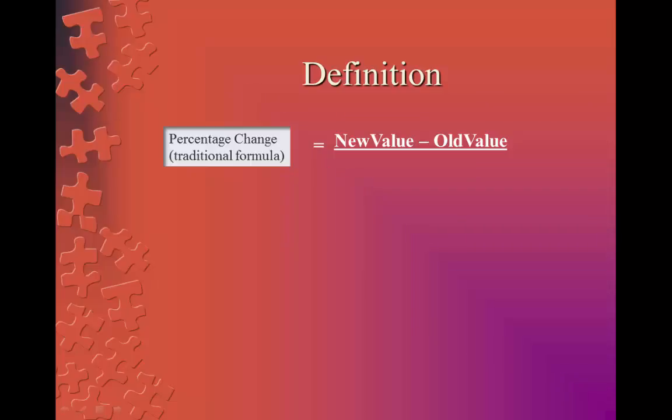Let's start with the definition. The traditional percentage change, as we all learned it in high school, is calculated by taking the absolute change and then dividing it by the old value. But why set the absolute change in relation to the old value and not in relation to the new value? Because our high school teachers told us so? That is a weak argument.